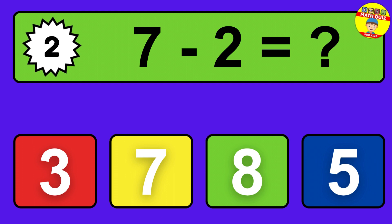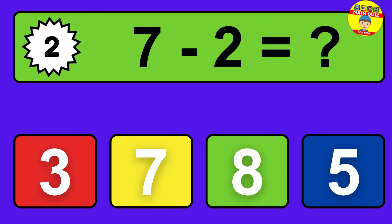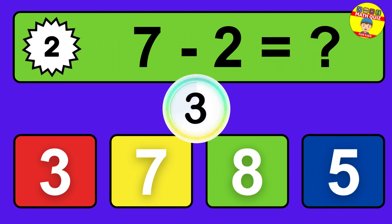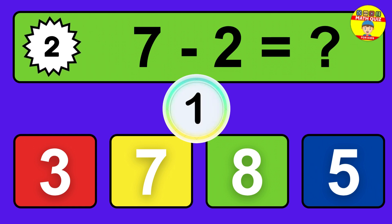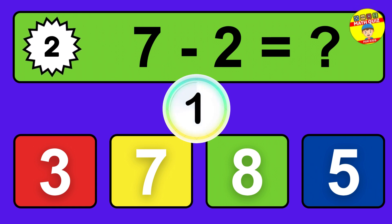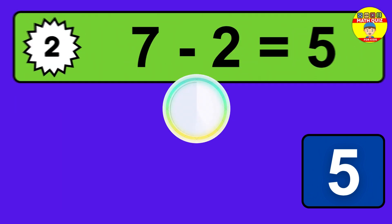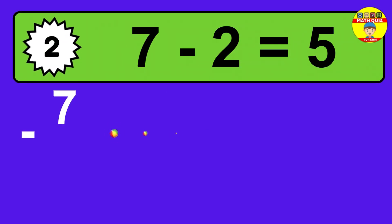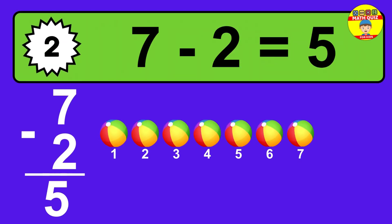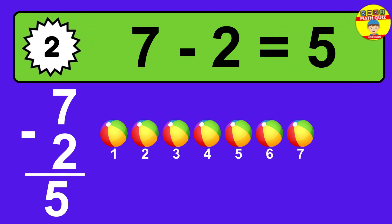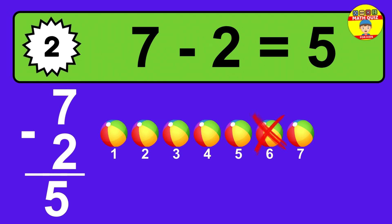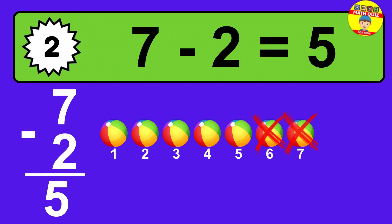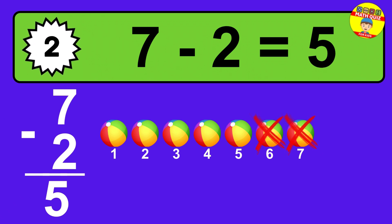Question two: seven minus two equals what? The answer is seven minus two is five. Let's count it. One, two, three, four, five.